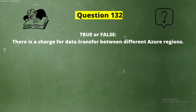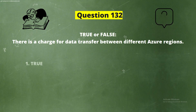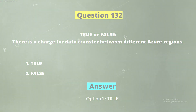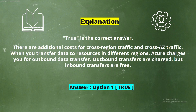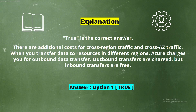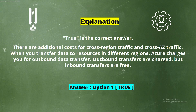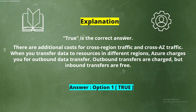Question 132. True or False? There is a charge for data transfer between different Azure regions. The options are Option 1, True, and Option 2, False. The correct answer is Option 1, True. There are additional costs for cross-region traffic and Azure-to-Azure traffic. When you transfer data to resources in different regions, Azure charges you for outbound data transfer. Outbound transfers are charged, but inbound transfers are free.